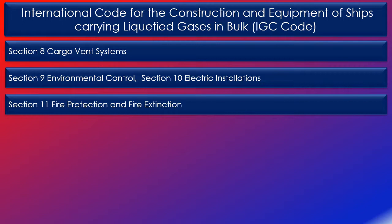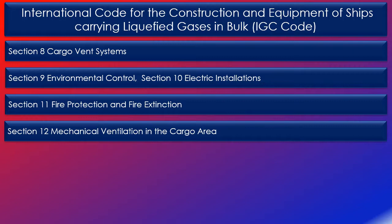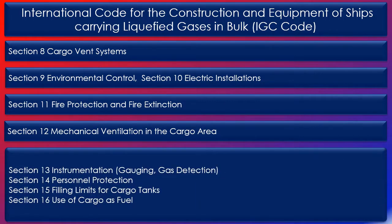Section 11 on fire protection and fire extinction sets out the requirements for fire safety, fire water main equipment, water spray systems, dry chemical powder fire extinguishing systems, cargo compressor and pump rooms, and firemen's outfits. Section 12 covers mechanical ventilation in the cargo area. Section 13 on instrumentation, gauging, and gas detection sets out the requirements for level indicators for cargo tanks, overflow controls, pressure gauges, temperature indicating devices, and gas detection.